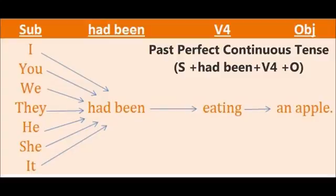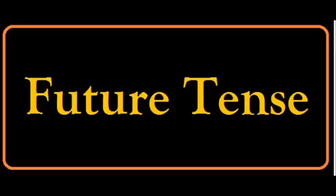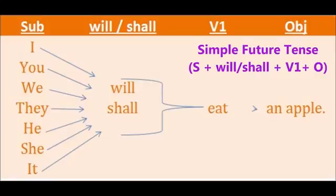The third tense is future tense. Till now we have discussed present tense and past tense; now we are going to enter the future tense. It also has four subtypes: simple, perfect, continuous, and perfect continuous. The first one is simple future tense. The structure is subject plus will or shall plus V1 plus object. Every subject mostly uses 'will'. Examples: I will eat an apple, you will eat an apple, they will eat an apple, she will eat an apple. There is a small difference: 'shall' indicates an action that will happen very soon — I shall go now. 'Will' indicates a longer future action, for example: I will become an IAS officer.